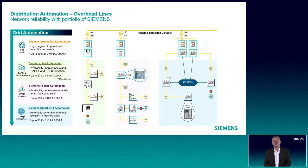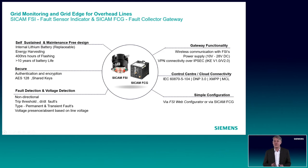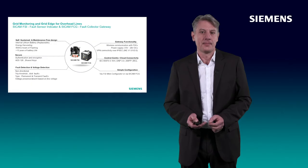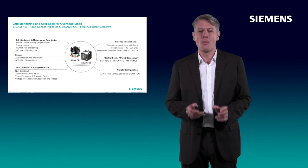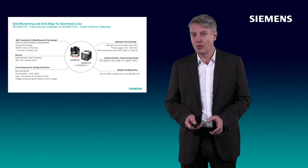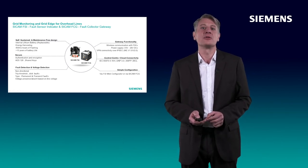The third architecture is the smart grid architecture, based on new protocols, new functions, and new applications — for example, IEC 61850. Let's focus first on the first pillar, on the grid monitoring and edge devices for overhead lines. We have a combination of SICAM FSI and SICAM FCG. These devices are directly mounted on the overhead lines and communicate via the SICAM FCG fault collector gateway to the cloud. This functionality is primarily there for monitoring short circuits, earth faults, and the overhead line to get an indication of where the fault is located.